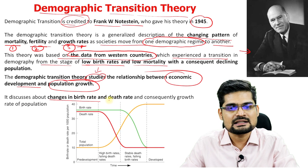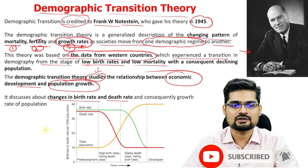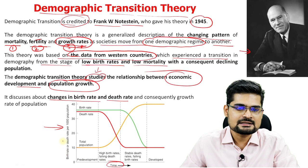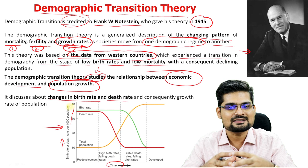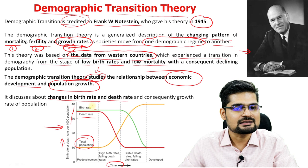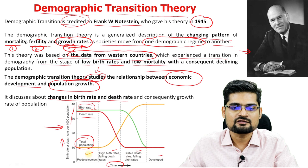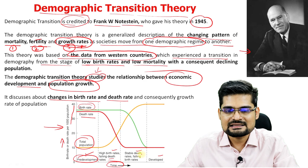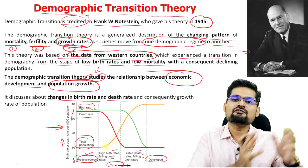The theory primarily discusses the change in birth rate and death rate. Looking at the graph, the x-axis is time and the y-axis is birth or death rate per thousand population. Three lines are shown: orange for total population growth, red for death rate, and green for birth rate. The graph is divided into four phases: the pre-developmental phase, high birth rate and falling death rate phase, stable death rate and falling birth rate phase, and lastly the developed phase.